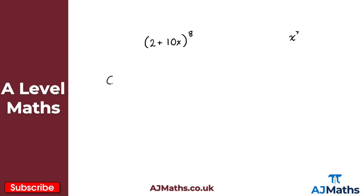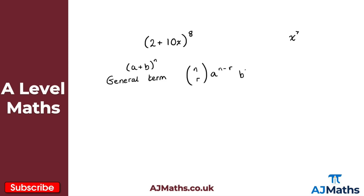We can do that. The general term is given by: for (a + b) to the power of n, the general term is n choose r, times a to the n minus r, times b to the power of r. So if I'm expanding something of the form a plus b to the power of n, the general term is n choose r × a^(n−r) × b^r.